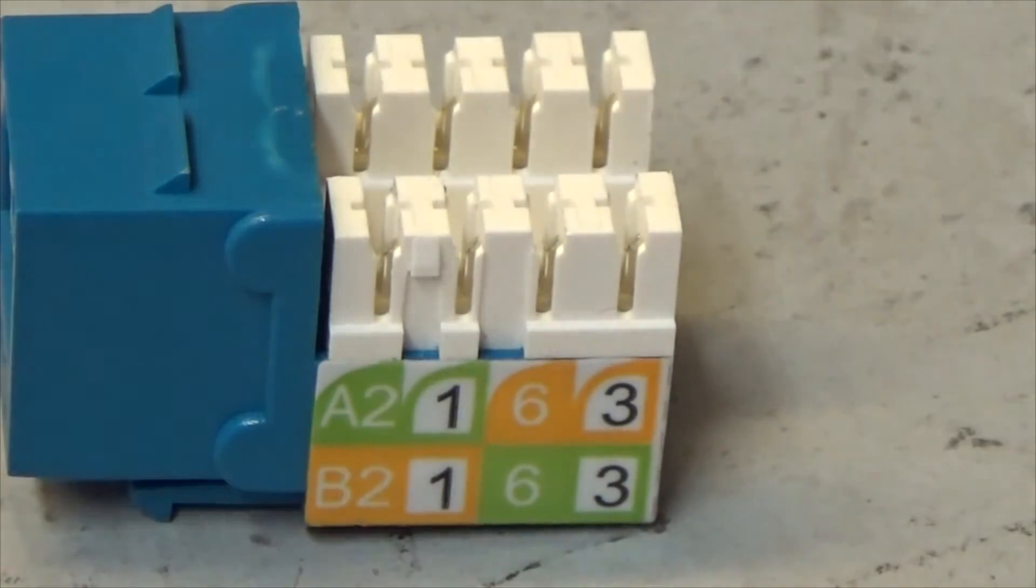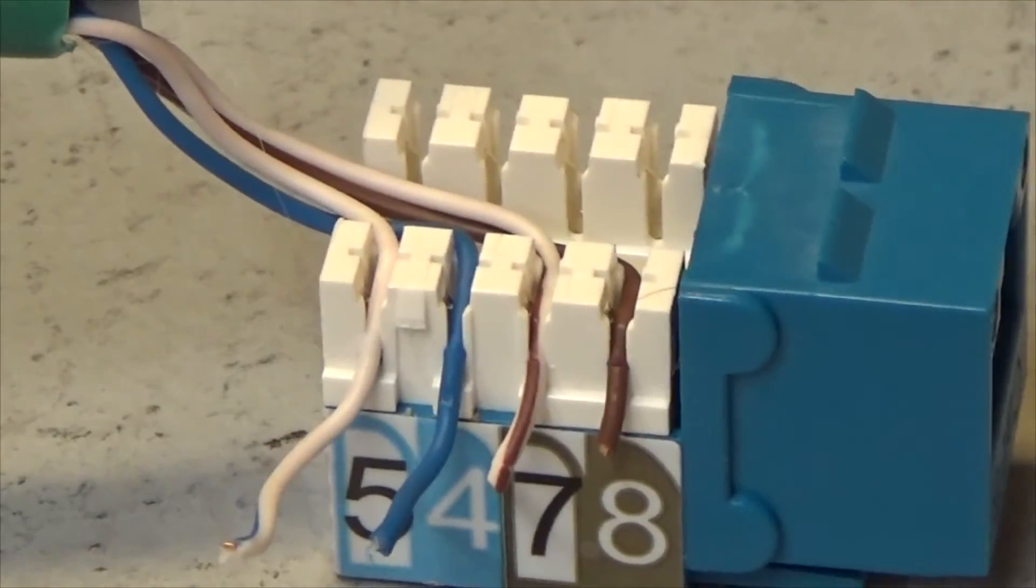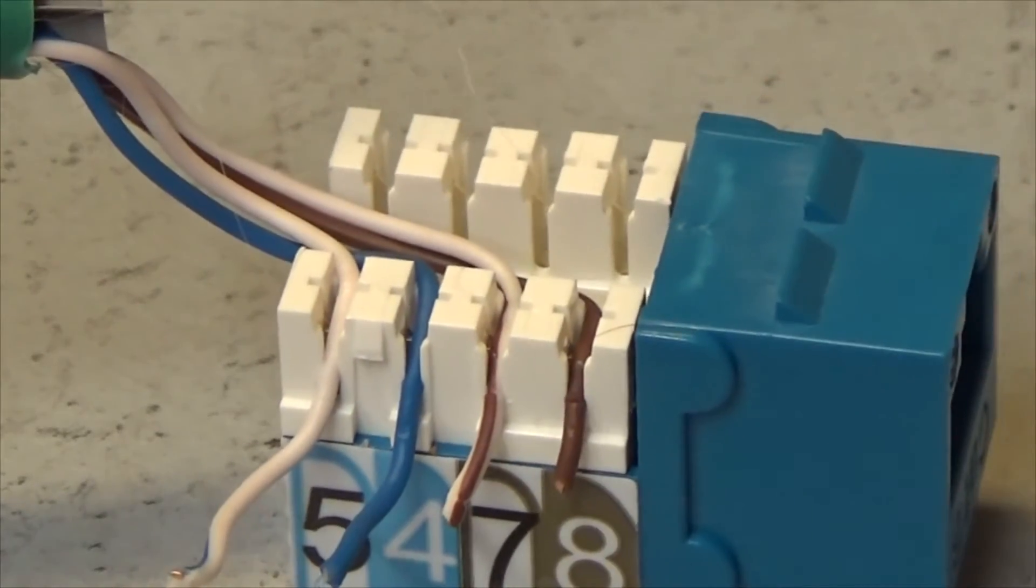So you don't want to do A on one, B on the other. I'm going to start with the brown and blue side. I'm going to go ahead and punch this side down.